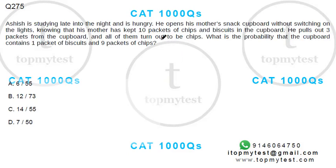This is a question from IFT. Ashish is studying late into the night and is hungry. He opens his mother's snack cupboard without switching on the lights, knowing that his mother has kept 10 packets of chips and biscuits in the cupboard. He pulls out 3 packets and all of them turn out to be chips. What is the probability that the cupboard contains 1 packet of biscuits and 9 packets of chips?